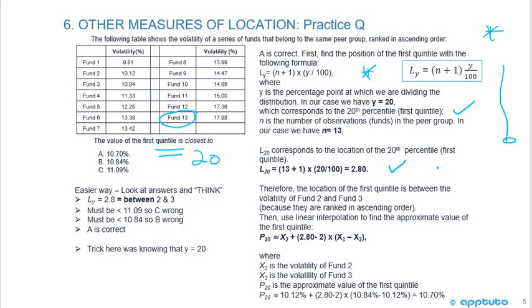L20 = (13 + 1) × (20/100) = 2.8. So you can see that's not a whole number.